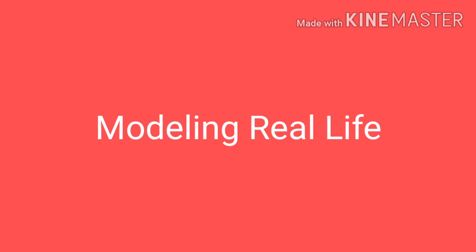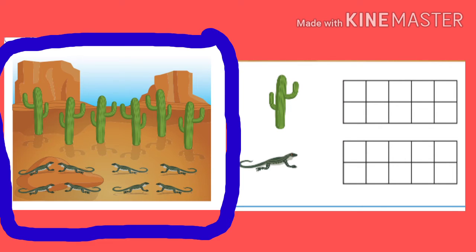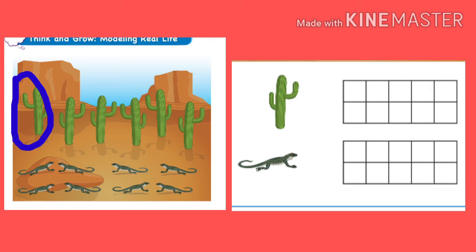Now let's proceed to modeling real life. Kids, look at the picture. What do you see? It's in the desert! You can see cactuses and lizards! In this activity kids, we are going to count the object, then say the number, and then color the boxes to show how many. Are you ready? Let's start first with the cactus. How many cactuses are there? Let's count! 1, 2, 3, 4, 5, 6! There are 6 cactuses!